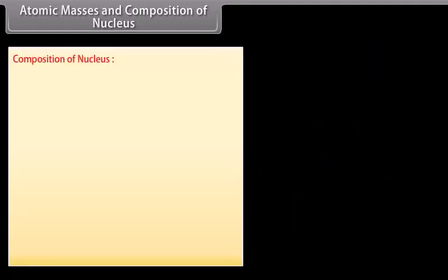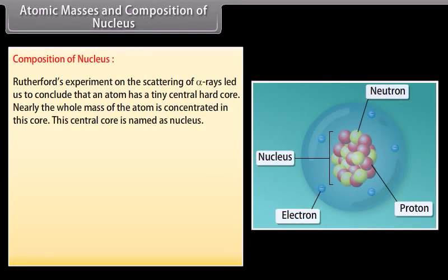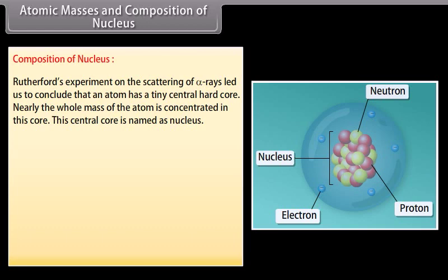Composition of nucleus. Rutherford's experiment on the scattering of alpha rays led us to conclude that an atom has a tiny central hard core. Nearly the whole mass of the atom is concentrated in this core. This central core is named as nucleus.